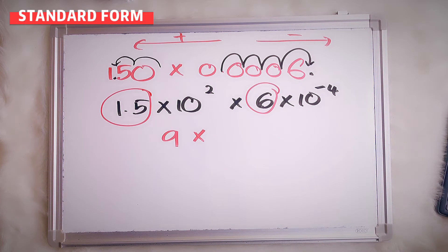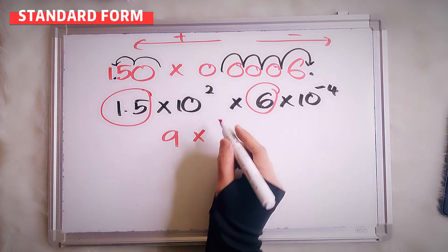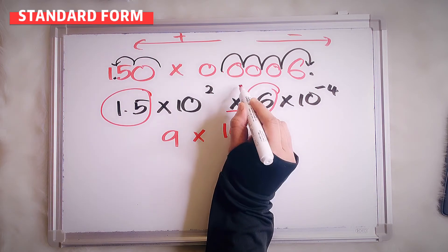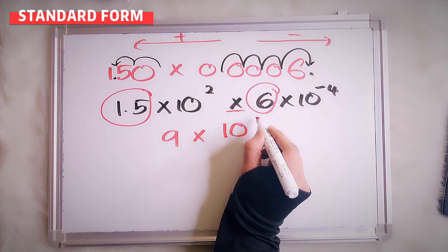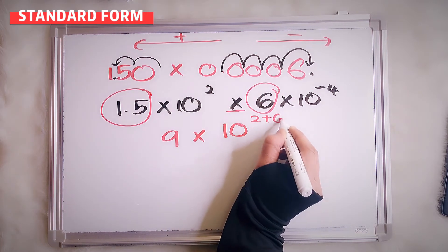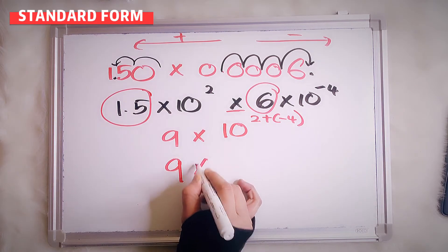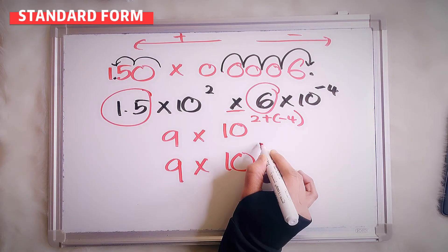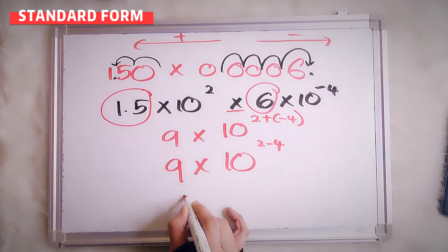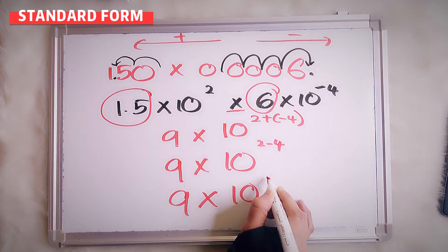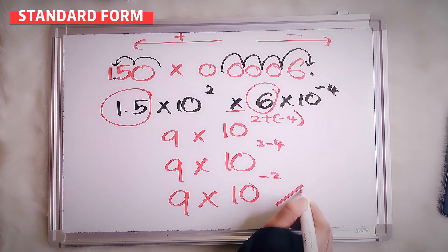Double checking: 1.5 multiplied by 6 — yes, that's correct, it's 9. So now for the powers of 10, this is multiply so we add: 2 plus negative 4. Your answer is 9 times 10 to the power of negative 2.